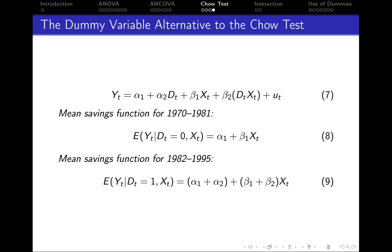Let's revisit this example. The mean savings function for the first period, from 1970 to 1981, is derived as follows: in this period the dummy variable is equal to 0, so the terms alpha 2 * d_t and beta 2 * d_t * x_t both disappear. What remains is simply alpha 1 + beta 1 * x_t, which is the mean savings function for the first period.